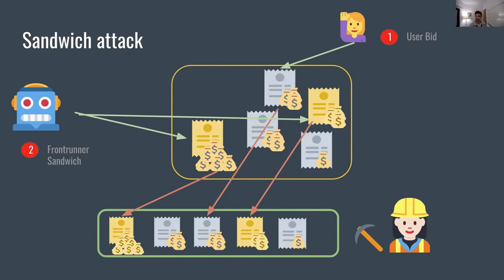In this case, the user broadcasts their transaction to the mempool, and the front-running bot notices that transaction, broadcasts one transaction to front-run it and get into the block first with a higher fee, and another one right after that sells the ETH back, and they collect the profit. This is a sandwich attack, which is becoming more and more popular and is quite well understood.